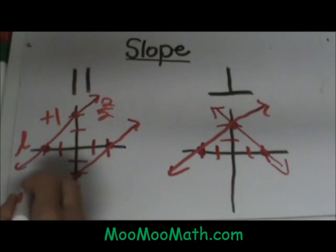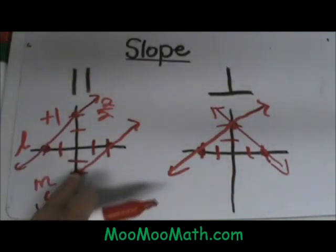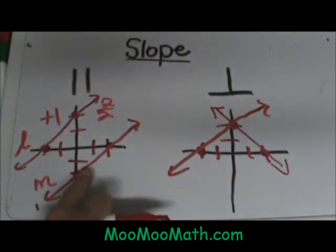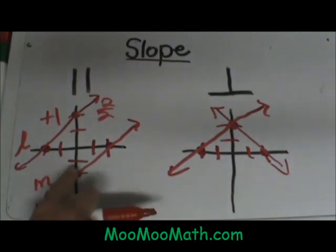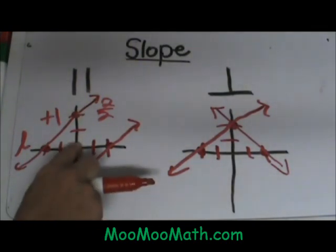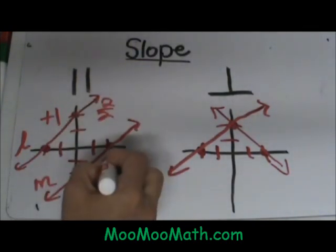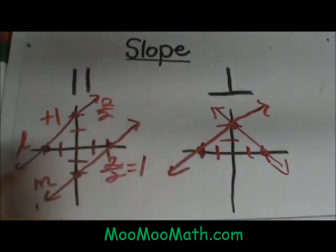Let's look at the second line. We will call that line M. It also has a slope of 1 because you are going to count up 2 over 2 which is 2 over 2 which simplifies to 1. The slope of parallel lines are the same.